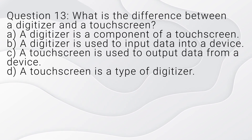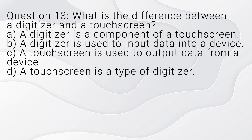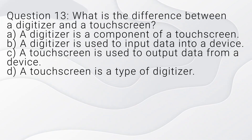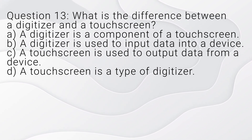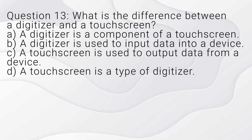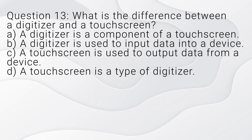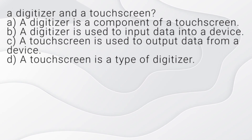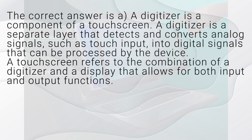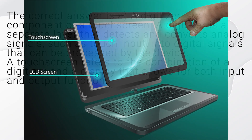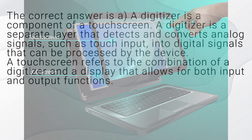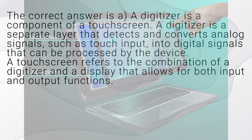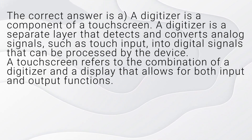Question 13. What is the difference between a digitizer and a touchscreen? A. A digitizer is a component of a touchscreen. B. A digitizer is used to input data into a device. C. A touchscreen is used to output data from a device. D. A digitizer is a separate layer that detects and converts analog signals, such as touch input, into digital signals that can be processed by the device. A touchscreen refers to the combination of a digitizer and a display that allows for both input and output functions.